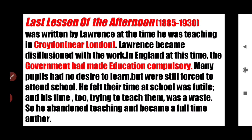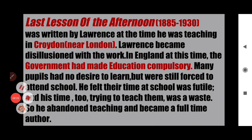Last Lesson of the Afternoon was written by Lawrence at the time he was teaching in Croydon, London. Lawrence became disillusioned with the work in England at this time. The government had made education compulsory, because of which many people had not desired to learn but were still forced to attend school. He felt that time at school was futile and his time too — trying to teach them was a waste. So he abandoned teaching and became a full-time author.